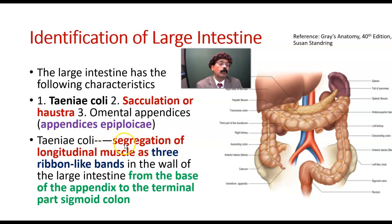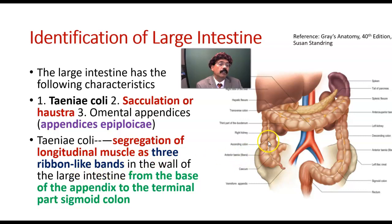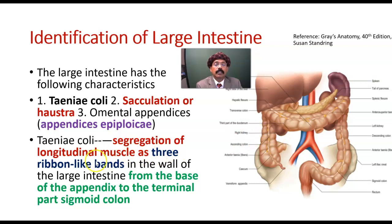What are the taenia coli? Taenia coli are segregation of the longitudinal muscle as three ribbon-like bands. We have three ribbon-like bands in the wall of the large intestine.